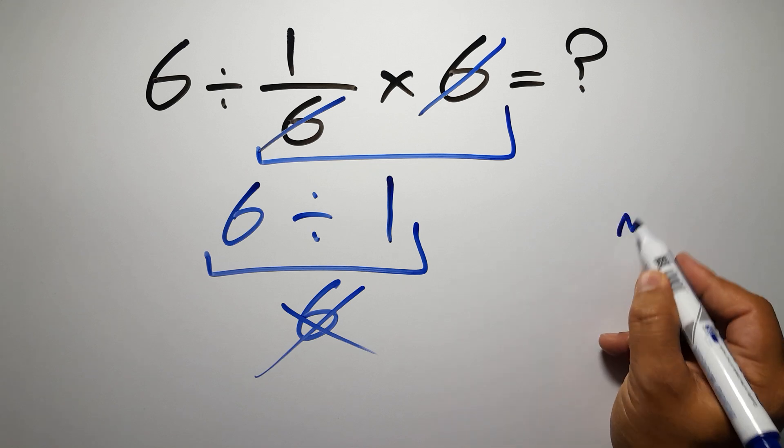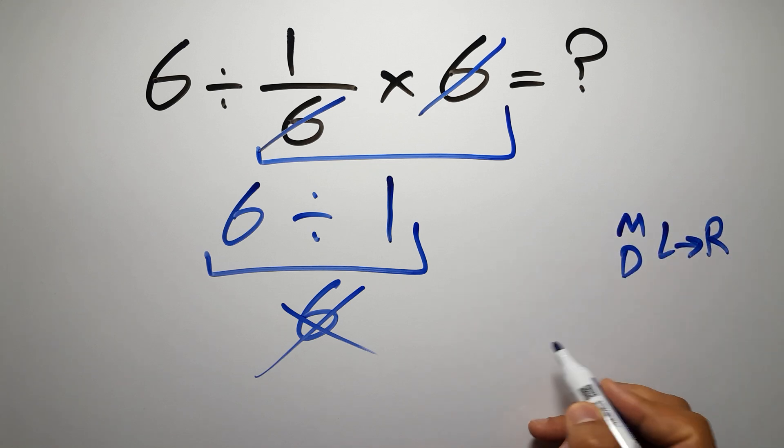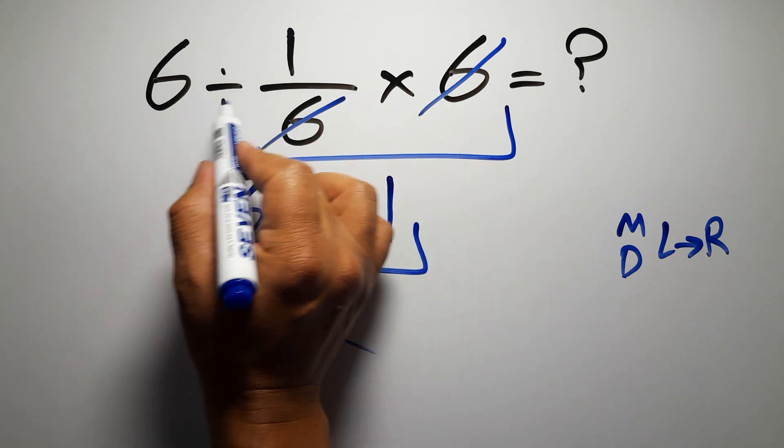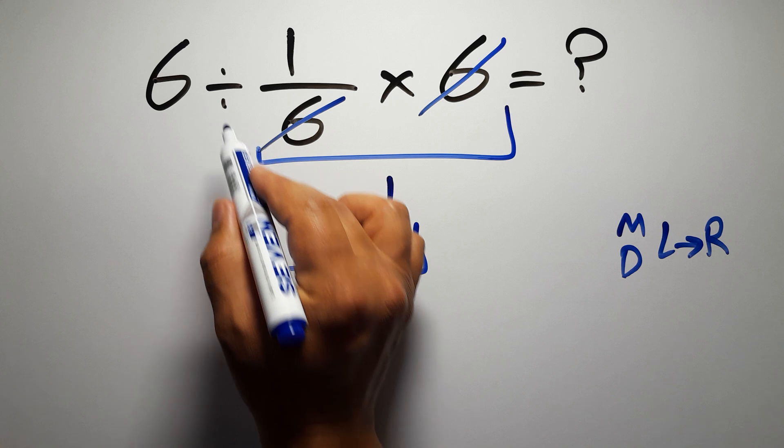According to the order of operations, multiplication and division have equal priority, and we have to go from left to right. So here, first we have to do this division, then this multiplication. If we do this multiplication before this division, it is wrong.